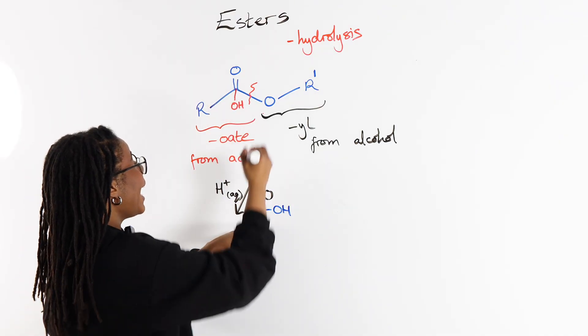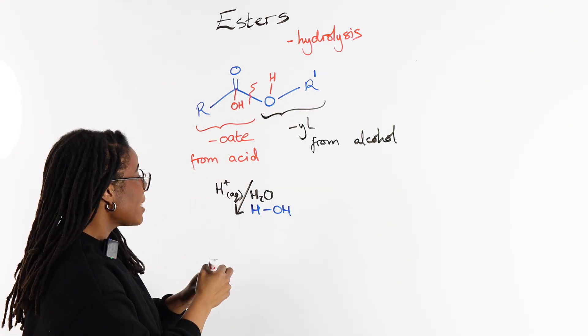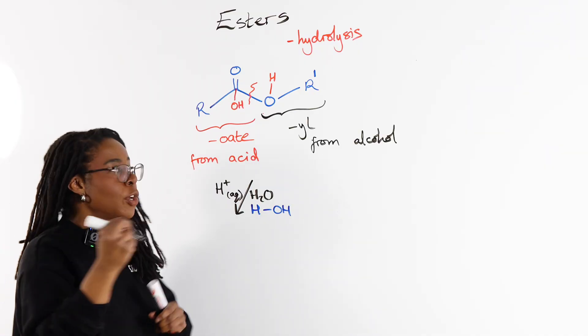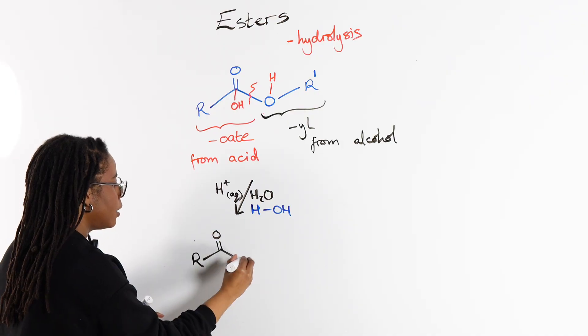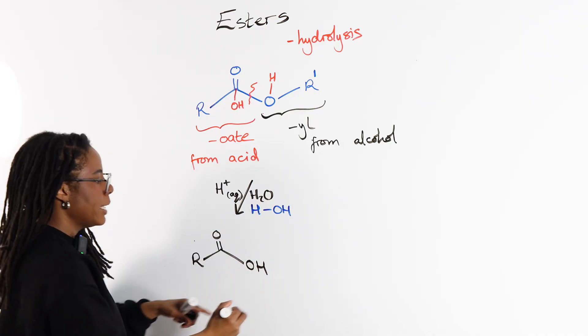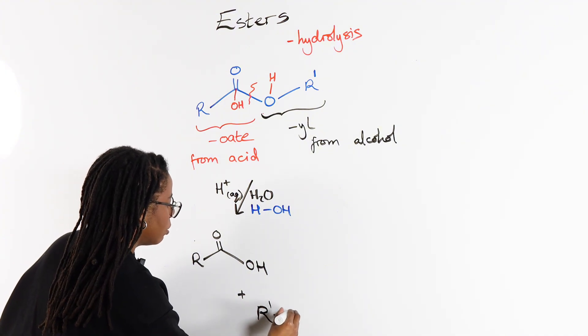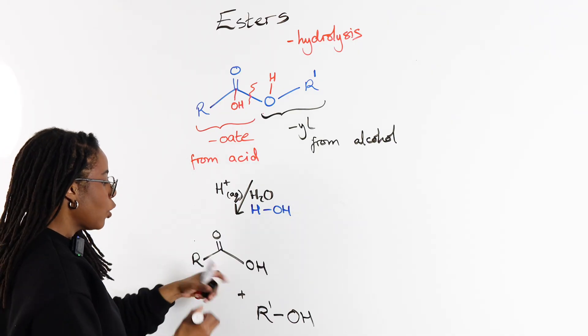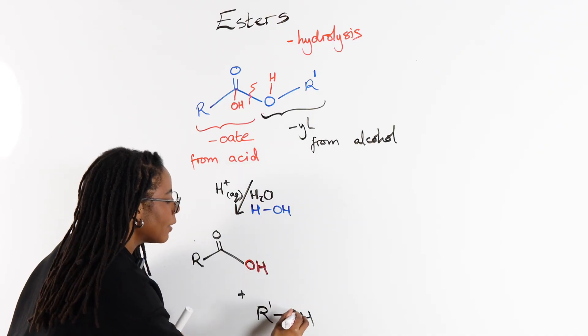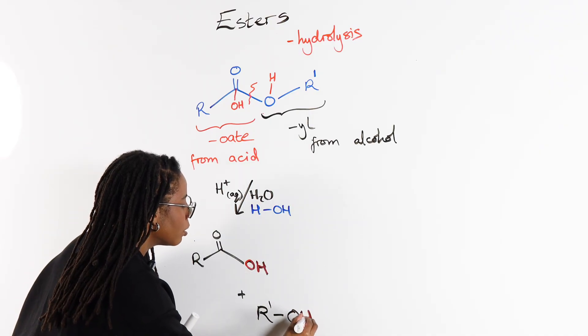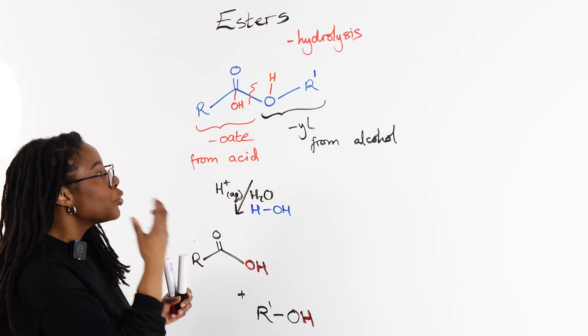And giving the H back to the alcohol, so back to the O. So as our products, what do we end up with? We end up with our carboxylic acid like this and our alcohol like that. We've given the OH back to the carboxylic acid and the H back to the alcohol, and it really is as simple as that.